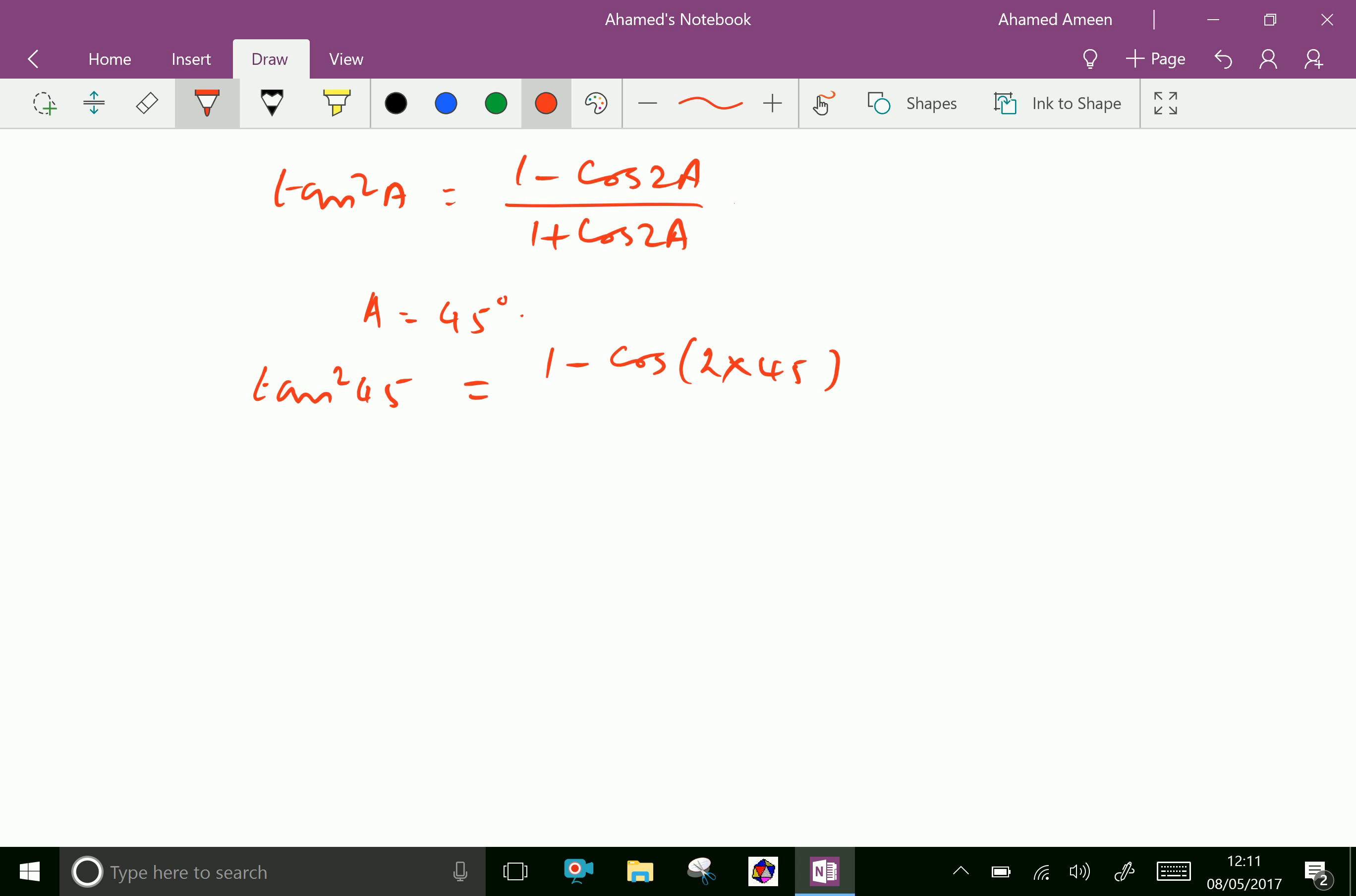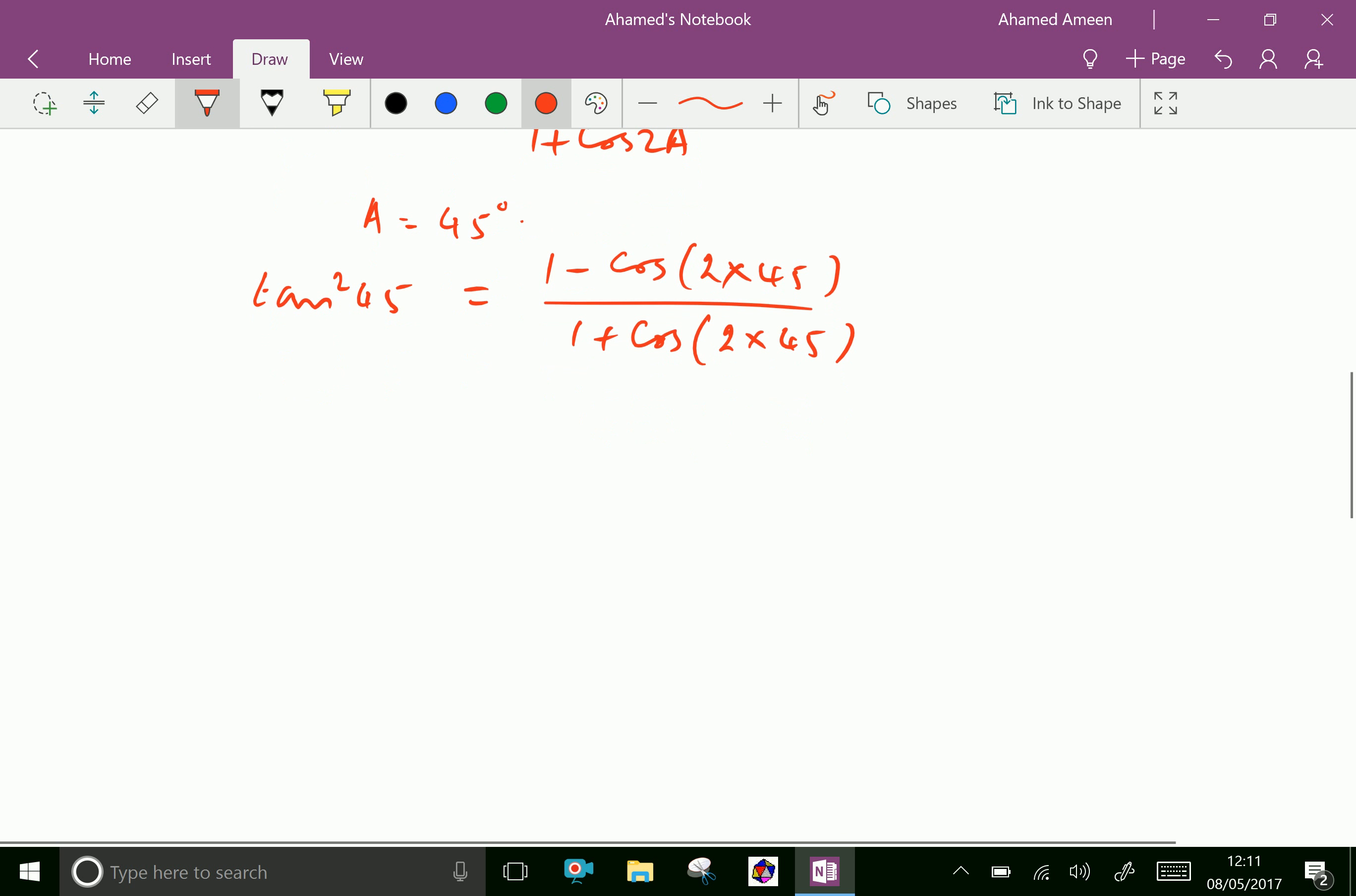Tan 45 is 1, so tan squared 45 equals 1 squared, which equals 1 minus cos of 2 times 45, which is 90.